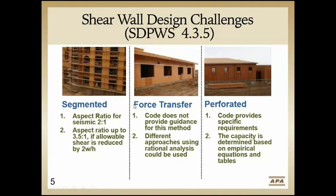Force transfer and perforated are two approaches where you look at the wall as an entire shear wall with openings provided. The way you do the design varies, however, in that the perforated approach is an empirically-based method. This is based on testing that originated in Japan. You look at the percentage of your full height sheathing in the wall line and the maximum size openings, and based on those two variables, you select a shear capacity adjustment factor — basically a reduction — that you apply to your shear calculation, hold-downs, and anchorage at the bottom of the full height pier segments.